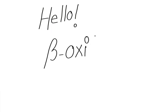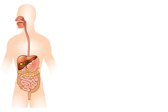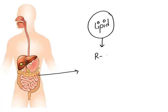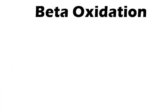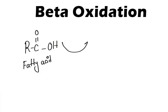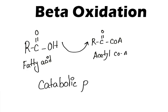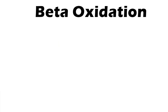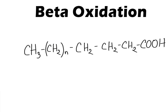Hello everyone, welcome to this video. Today we're going to discuss a very important topic which is beta oxidation of fatty acid. In our previous video of lipid digestion and absorption, we came to know that one of the end products of lipid digestion is fatty acid. In beta oxidation, the fatty acid is broken down to form acetyl-CoA. As it is a breakdown process, large fatty acid molecules are broken down into smaller molecules with release of energy, so it is a catabolic pathway.